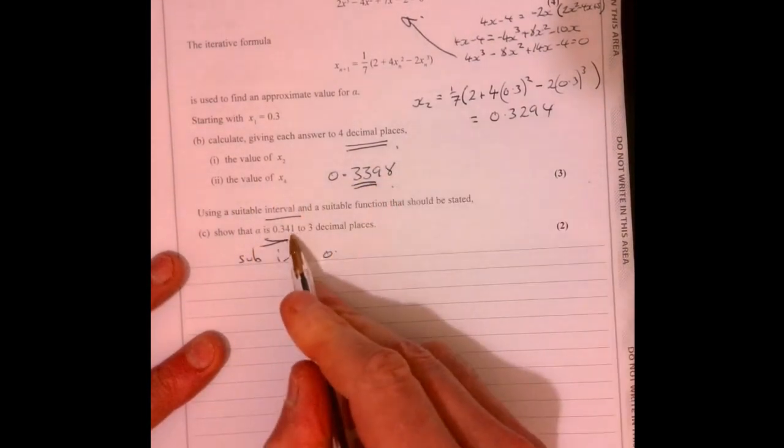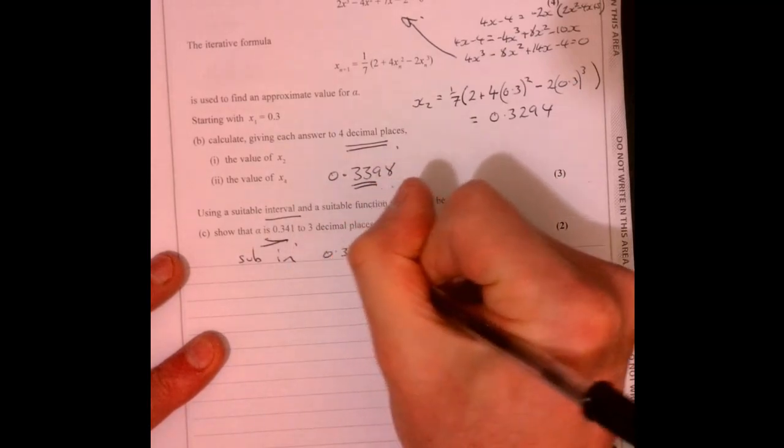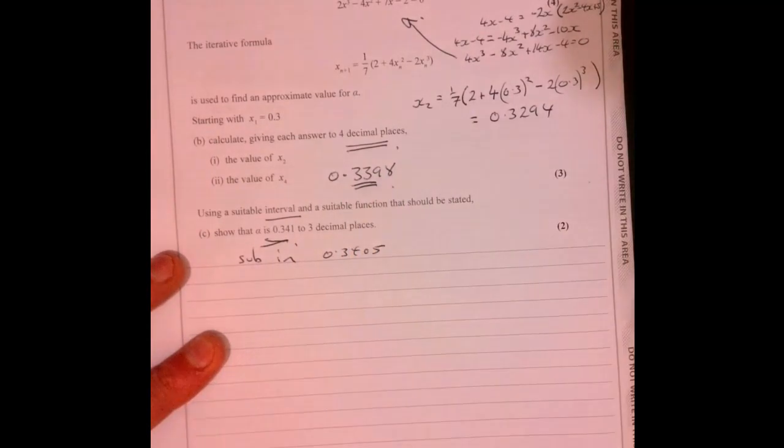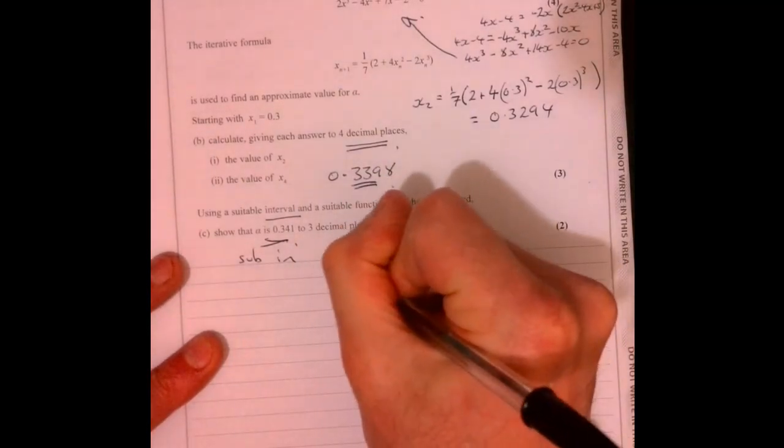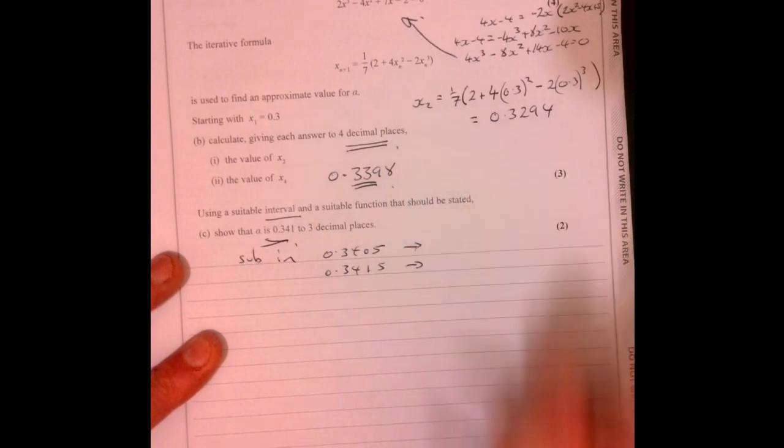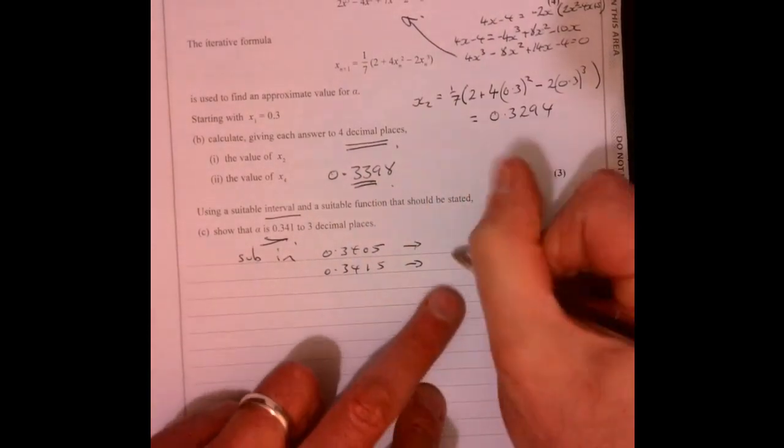Well, basically, what it's telling you to do is that if we sub in 0 point, so let's come slightly either side of that. So imagine it's been rounded to three decimal places. So sub in this figure, sub in this figure just here, and what do you end up getting?